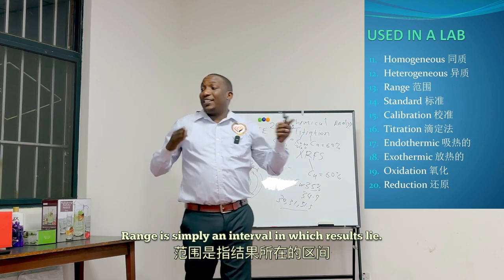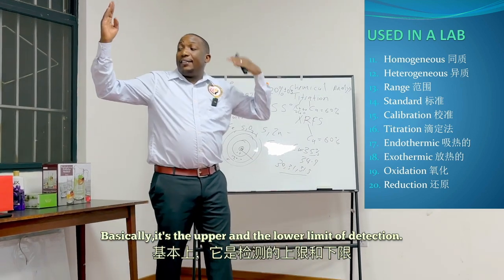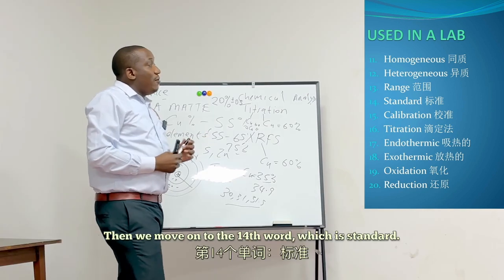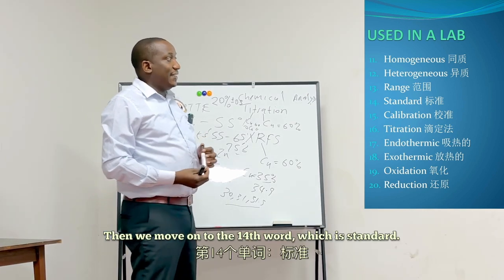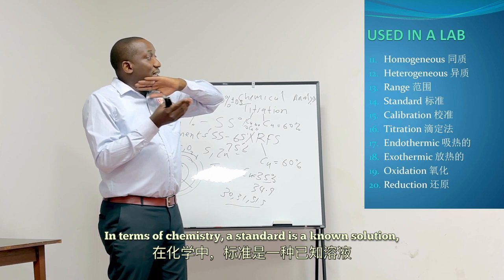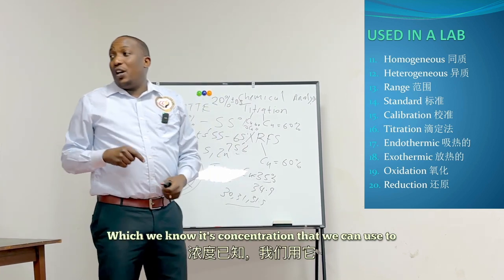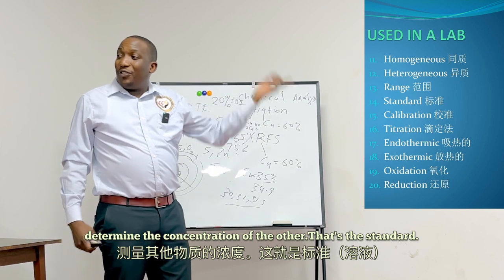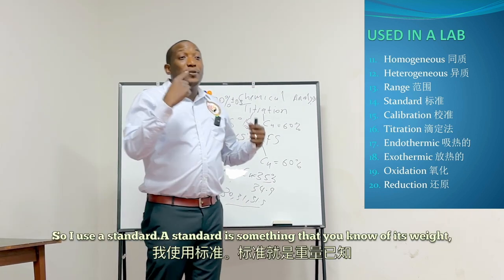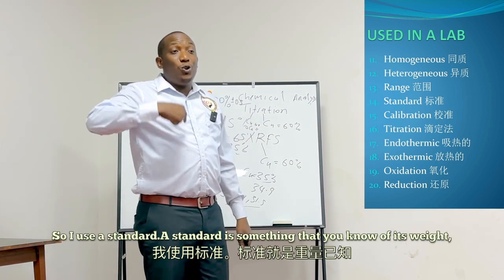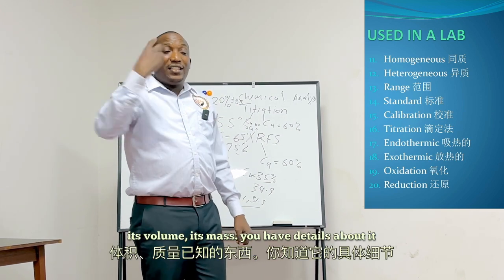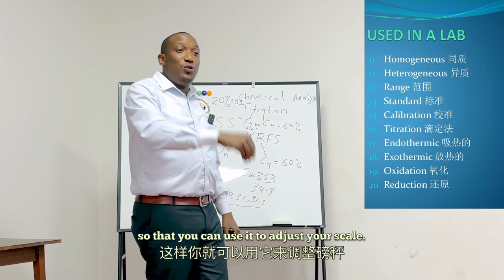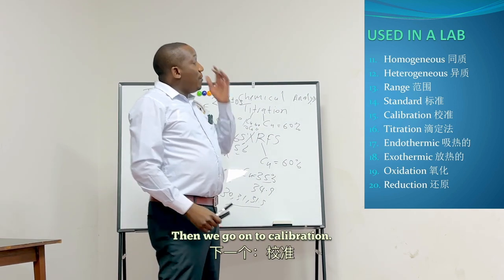The next word is range — simply an interval in which results lie, basically the upper and lower limit of detection. Then the 14th word is standard. In chemistry, a standard is a known solution of known concentration that we can use to determine the concentration of another solution. A standard is something whose weight, volume, and mass you know in detail, so that you can use it to adjust your scale.